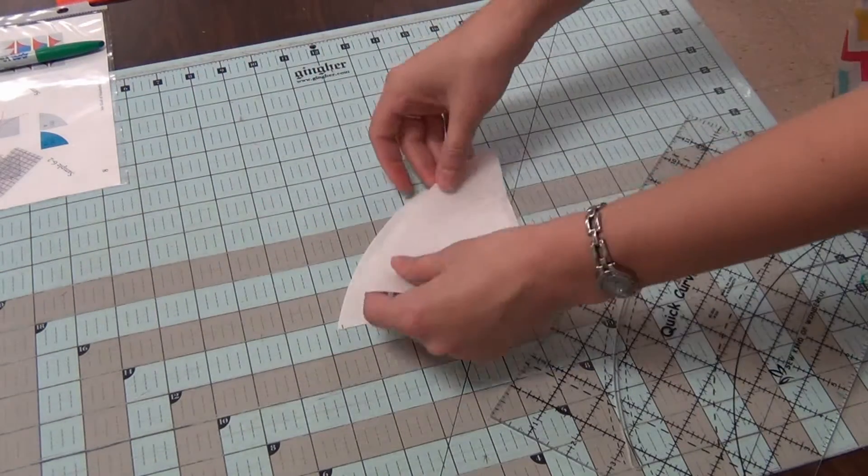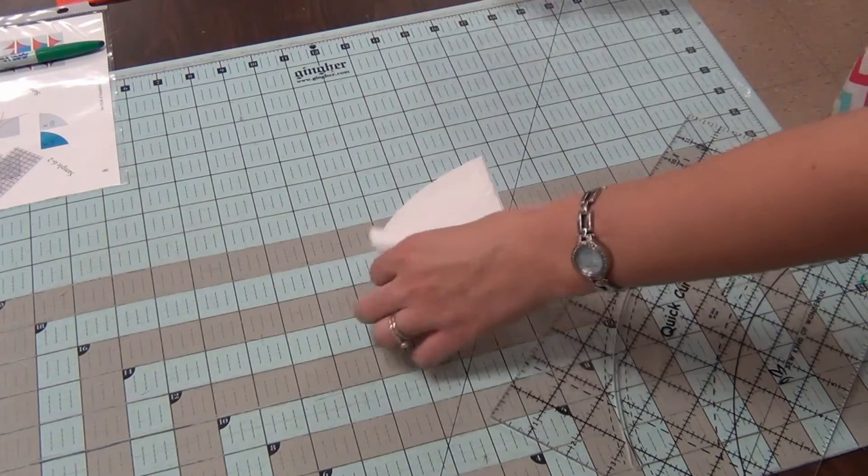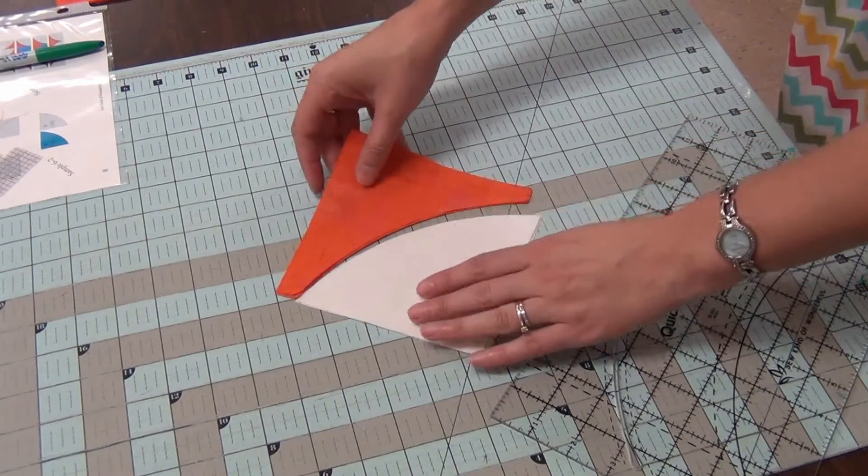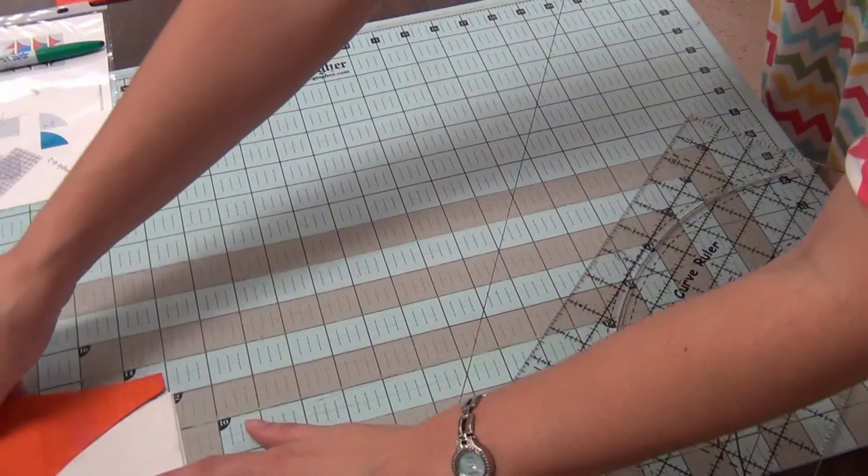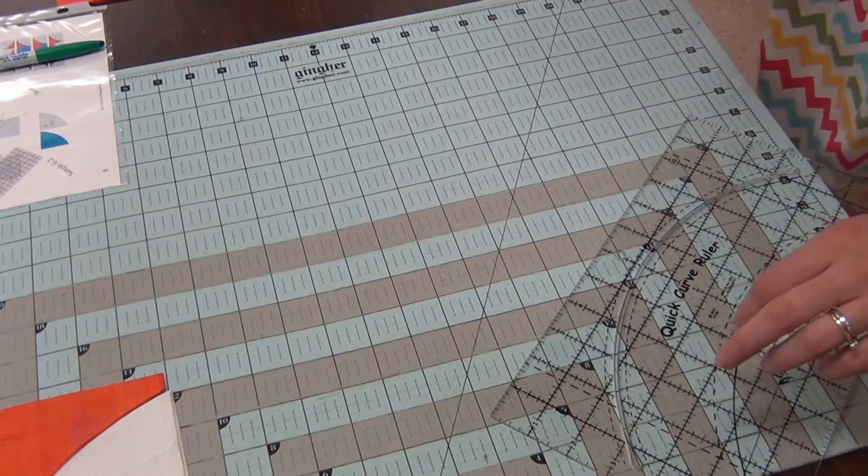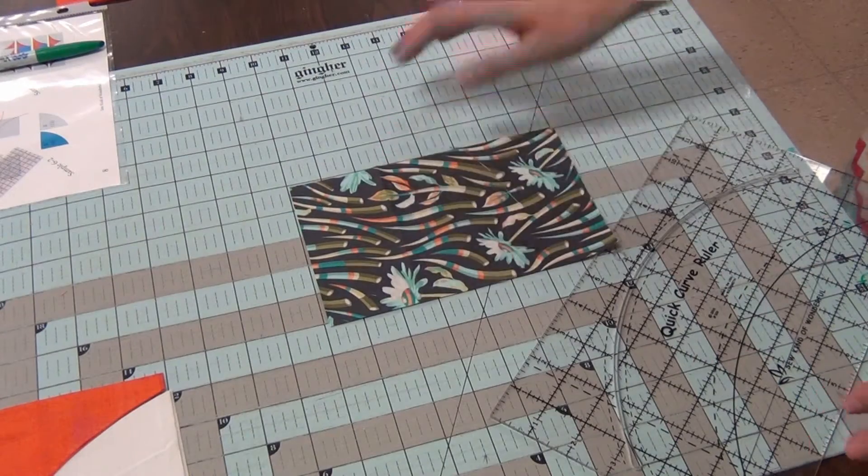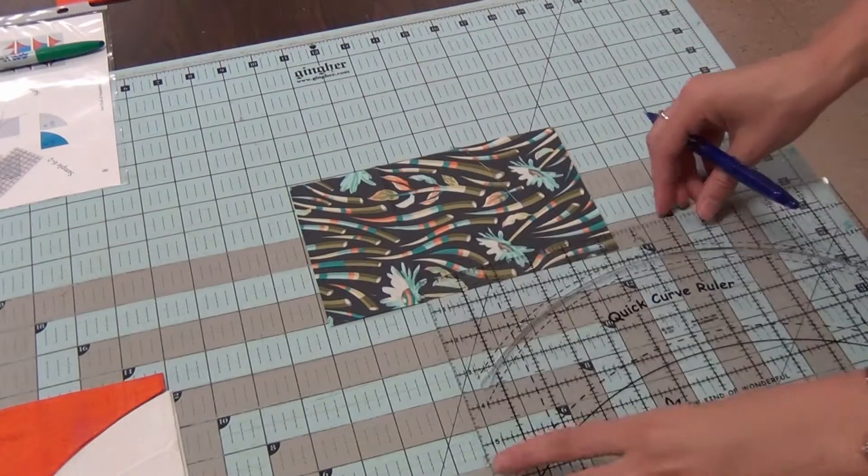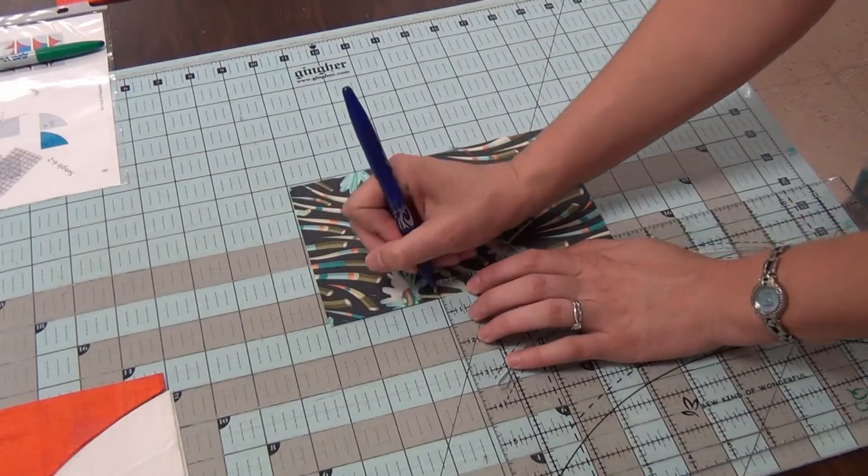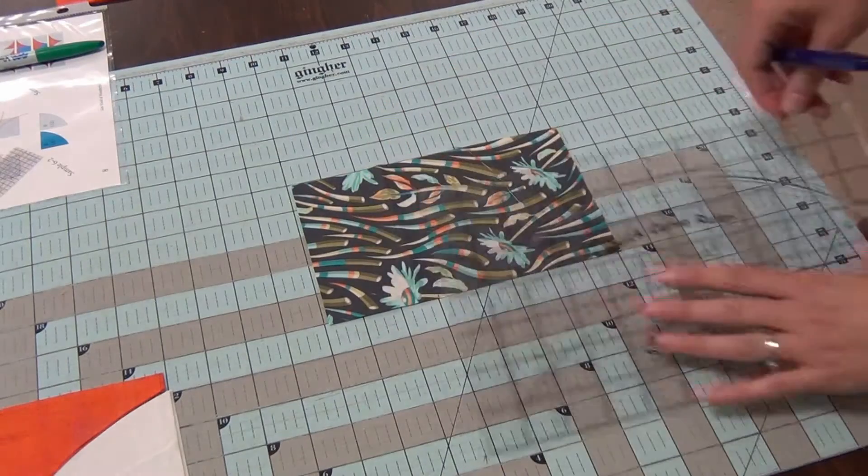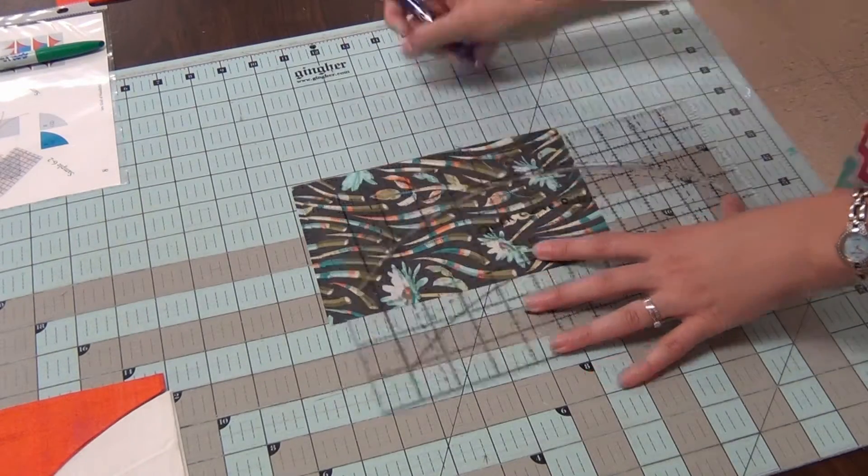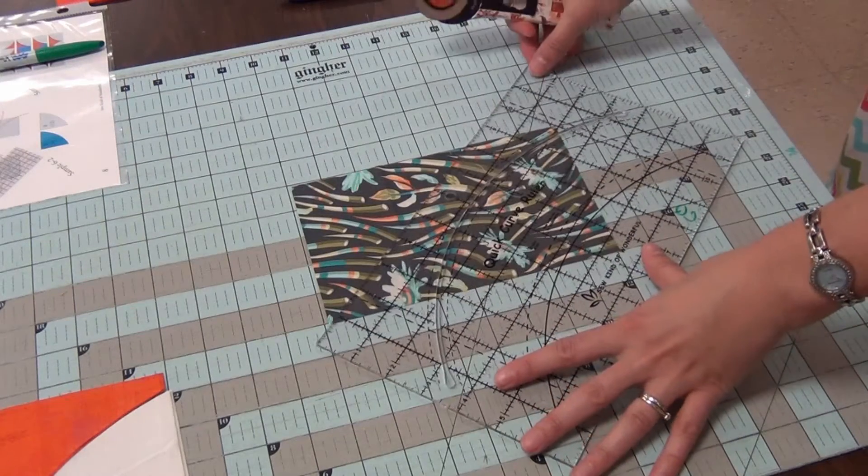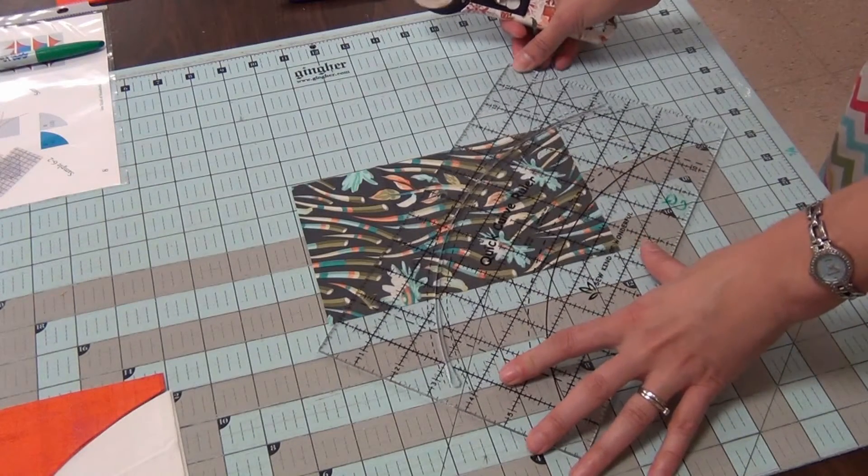So now I have two identical pieces that are going to be sewn together to create a half square triangle block. We're also going to be sewing half square triangle blocks and cutting the focus print the same way. So you'll again mark five inches and make your cuts with your quick curve ruler.